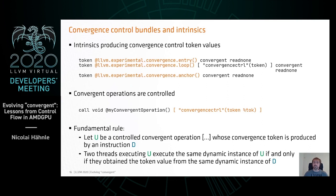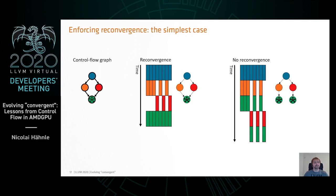The tool we introduce is a notion of convergence control tokens. Those tokens are produced by new experimental intrinsics. Convergent operations are expected to have a convergent control operand bundle that receives one of those token values. The fundamental rule is: if you have a convergent operation controlled by one of those tokens, two threads execute the same dynamic instance of it if they got the token value from the same dynamic instance — it's a way of inheriting convergence from the producer of the token.